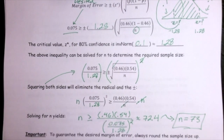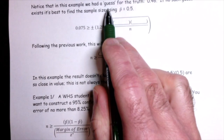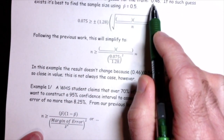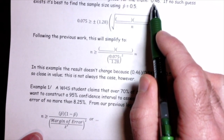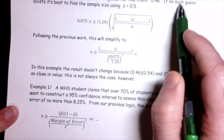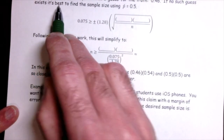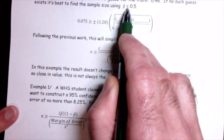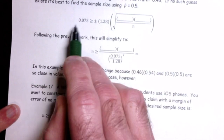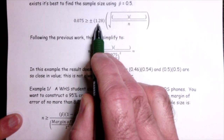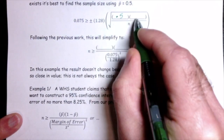In this example we had a guess for the truth: 0.46. But if you're building a brand new confidence interval for a new parameter and you don't know what that parameter will be, the best way to guarantee your margin of error is to use a sample proportion estimate of 0.5. Here's the same desired margin of error and the critical value for 80% confidence — let's use 0.5, so 1 minus 0.5 is also 0.5.